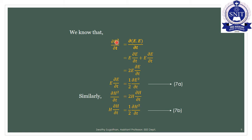We evaluate ∂/∂t(E²): taking the product, ∂/∂t(E · E) = E · ∂E/∂t + E · ∂E/∂t = 2E · ∂E/∂t. So E · ∂E/∂t = ½ ∂/∂t(E²). This gives us the electric field identity for equation 7a.